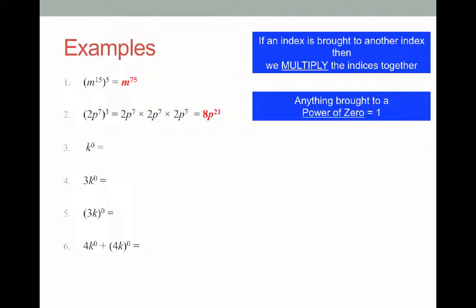Question three: k to the power of 0. Anything brought to a power of 0 is 1, so k to the power of 0 is 1. Question four: 3k to the power of 0. That zero is only applied to the k, so k to the power of 0 is 1, and we have 3 times 1, which equals 3. A common wrong answer is 1 — people think the zero-index rule always gives 1 — but realize that the 3 is a separate coefficient being multiplied by the letter.